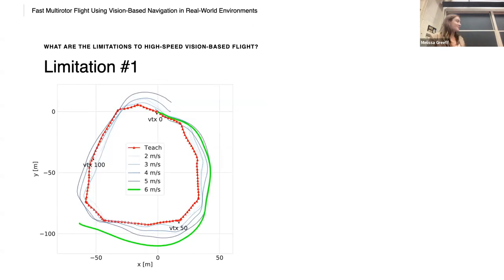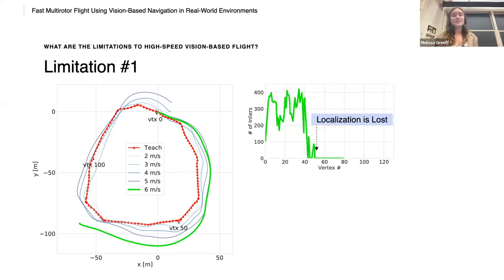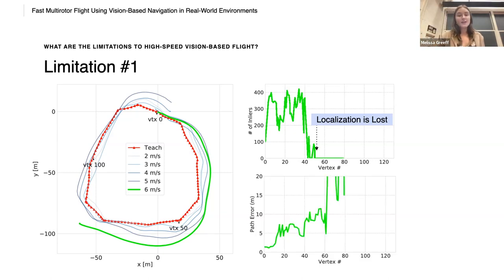So to reinforce this point, we fly another circular path in red as the TEACH, and then repeat at increasing speeds from two all the way up to six meters per second, using vision and a perception agnostic PD controller. And at six meters per second, at around vertex number 50, the error is too large with the TEACH path, and the number of inliers drops to zero. And so we say that localization is lost. And what we see is that the path error increases and the vehicle actually cannot recover from this point.